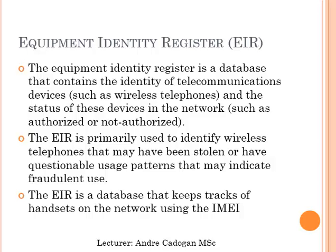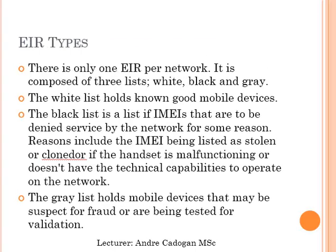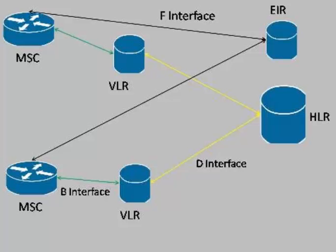The equipment identity register, EIR, is a database that contains the identity of telecommunication devices — hence why we ask people to register SIM cards in their names. The EIR's primary function is to identify wireless telephones that may have been stolen or have questionable usage patterns, using the IMEI registration number to track exactly where the handset is located. There are certain types within the EIR: the whitelist holds good mobile users who registered SIM cards in their names; the blacklist is for those denied services; and the greylist is for those suspected of fraud or being tested for validation. The interface between the mobile switching center and the equipment identity register is the F interface.